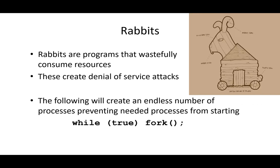Another animal in our zoo of malware are rabbits — programs that just waste resources. They consume resources in all sorts of ways: a simple example is a loop that runs forever, creating new processes, filling up the disk with random files, or whatever else harms the system. That's what a rabbit does — wasteful consumption of resources.